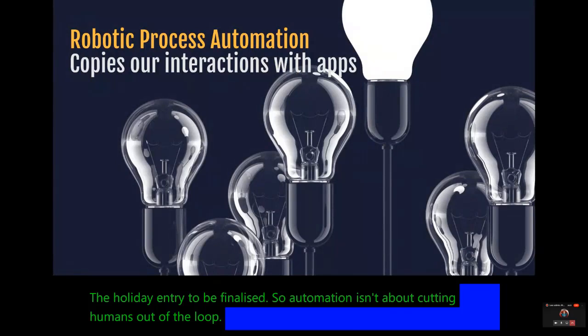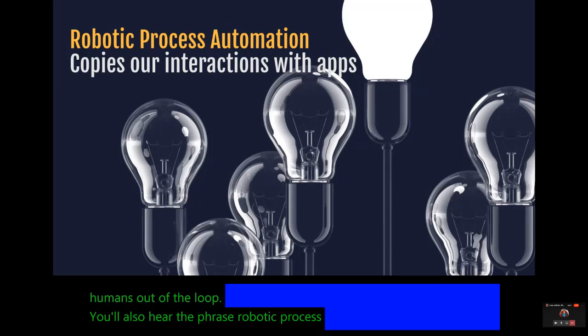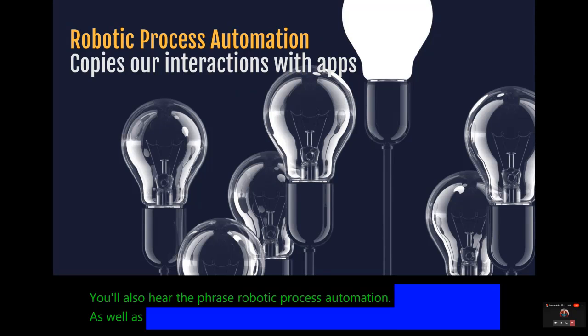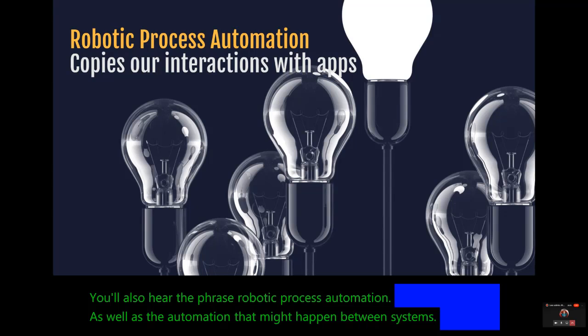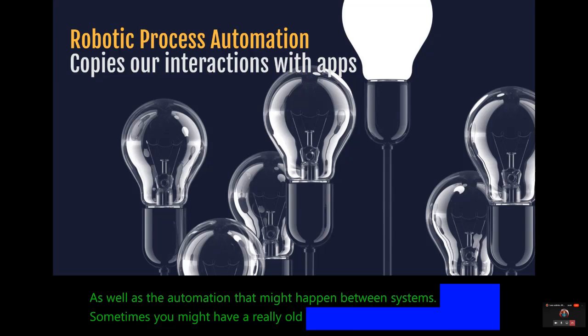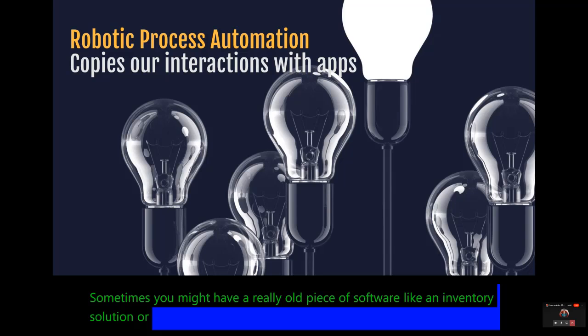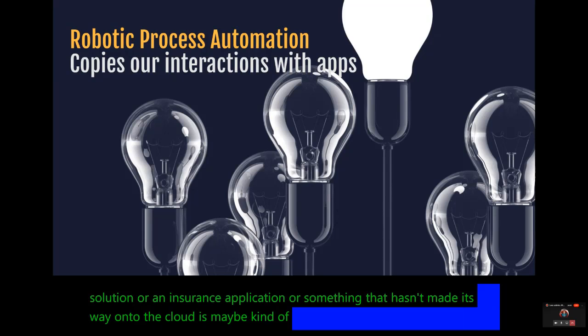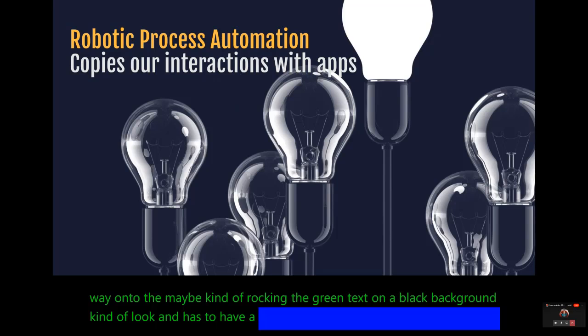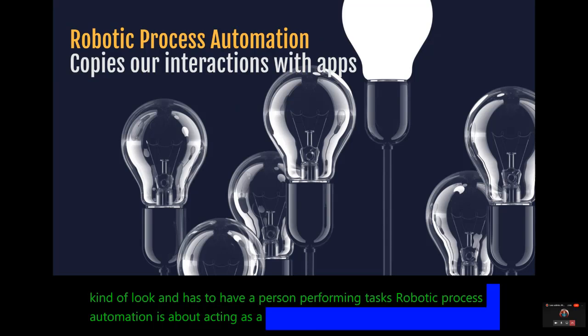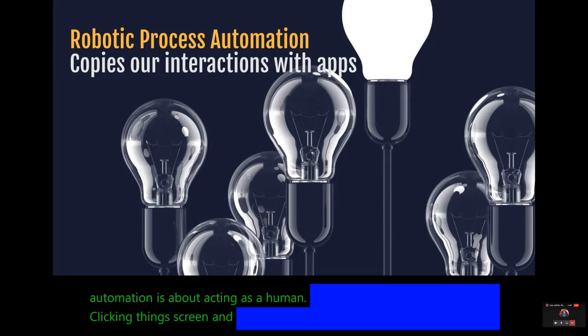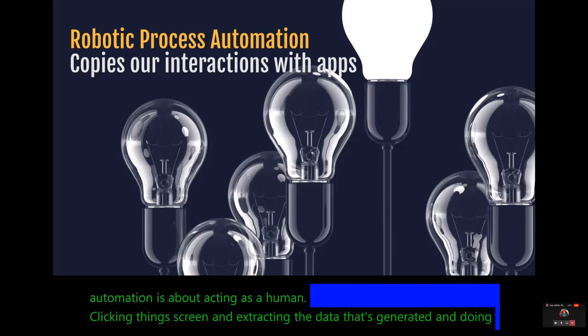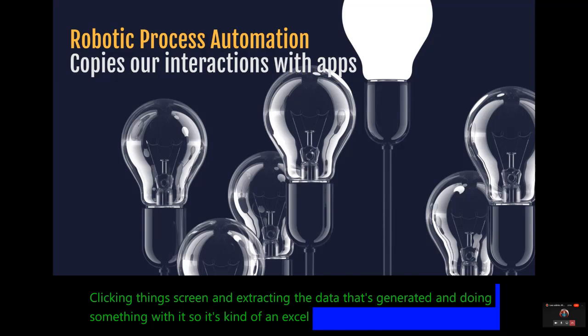You'll also hear the phrase robotic process automation. As well as the automation that might happen between systems, sometimes you might have a really old piece of software like an inventory solution or an insurance application or something that hasn't made its way onto the cloud, is maybe kind of rocking the green text on a black background kind of look and has to have a person performing tasks. Robotic process automation is about acting as a human, clicking things on screen and extracting the data that's generated and doing something with it. So it's kind of an Excel macro on steroids where it mimics a person.